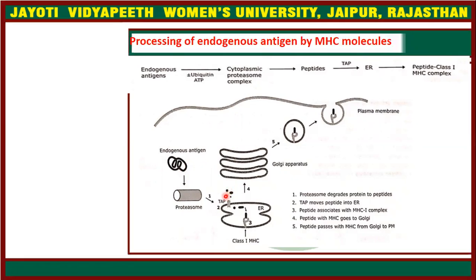So these are the small peptides produced after degradation. After degradation into small peptides, some specific proteins also known as the Transport Associated Protein (TAP) complex move these peptides to the endoplasmic reticulum. On the surface of the endoplasmic reticulum, there is an MHC complex.